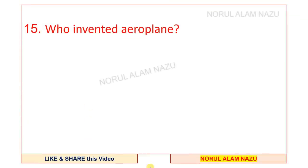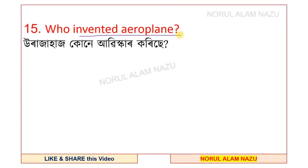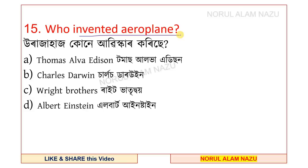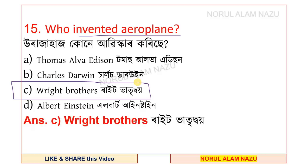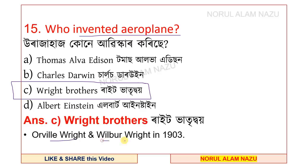Question number 15. Who invented the aeroplane? The answer is the Wright brothers — Orville Wright and Wilbur Wright. They invented the aeroplane in 1903.